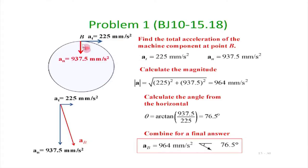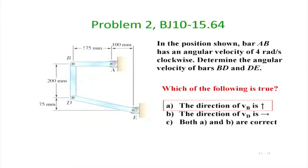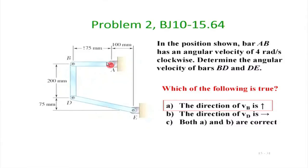At this point the normal component is omega squared times r in the inward direction, and the tangential component is already given to us. We find the resultant, compute the angle, and we have our final answer. Now the next question is a somewhat complicated link mechanism, but it is still a one-degree-of-freedom problem — think about it and you will realize that.